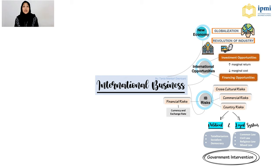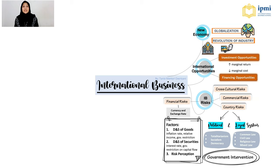Similar to the price of goods, currency and exchange rates are related to the demand and supply of the currency itself. There are three factors affecting this: first, the demand and supply of goods in the country, impacted by inflation rate, relative incomes, and government restrictions on goods flow. Second, the demand and supply of securities, impacted by interest rates and government restrictions on capital flows. The third factor is risk perception, related to the non-economic state of the country.